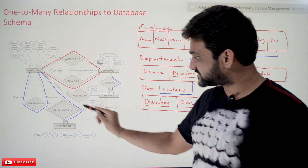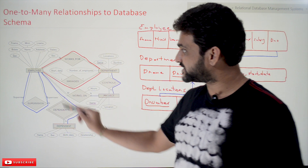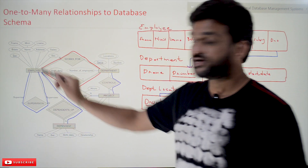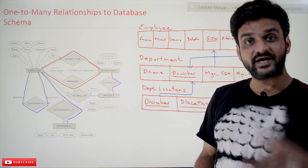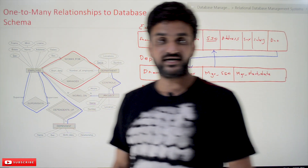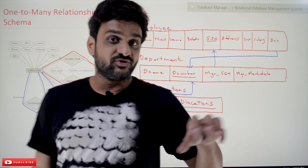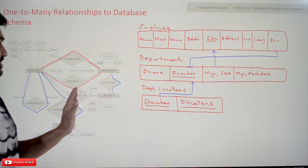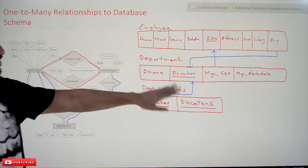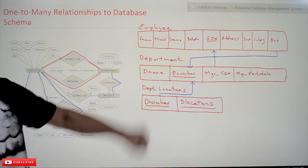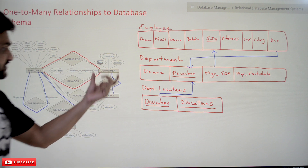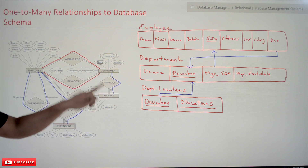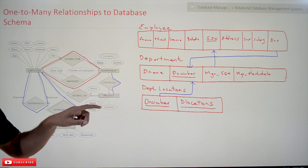This is the second one-to-many relationship, and this is the third one-to-many relationship in the ER diagram. We will try to convert all these relationships into a database schema. We'll start with this one — Department-Project, and the relationship is 'controls'.